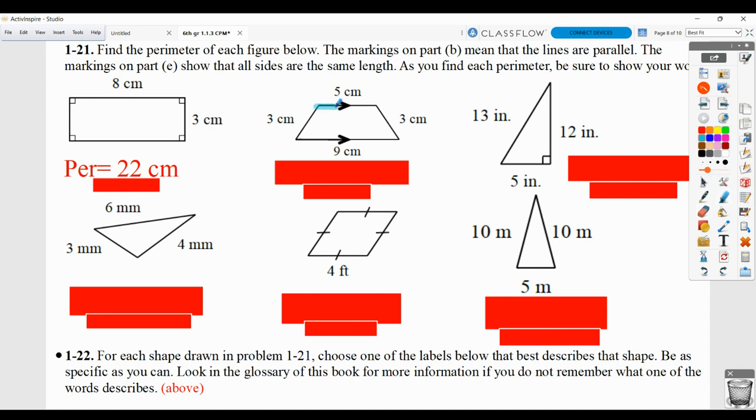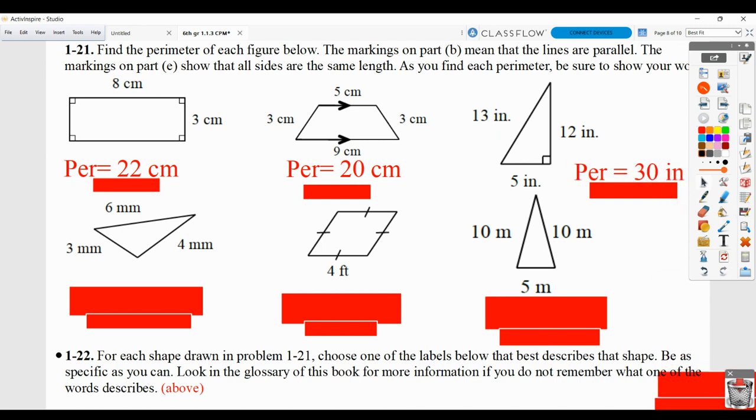Here you should show that you added the 5 plus 3 plus 9 plus 3 to get you an answer of 20 centimeters. Here you'd be adding 13 plus 12 plus 5, getting you 30 inches. 6 plus 3 plus 4, giving you 13 millimeters.